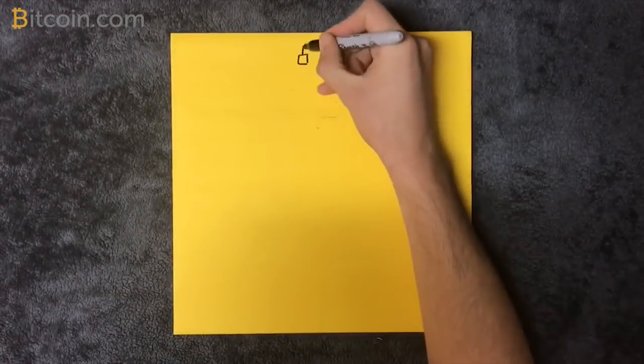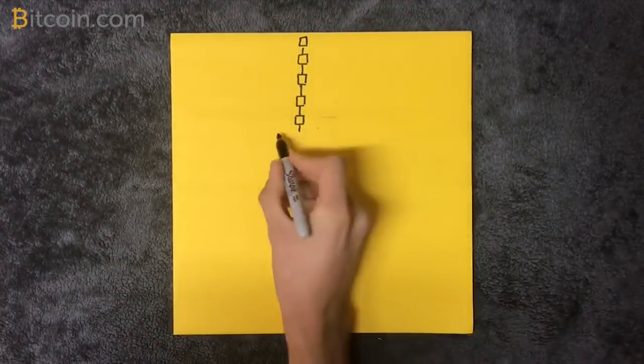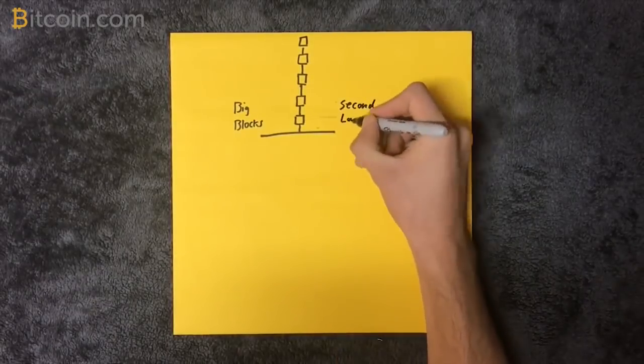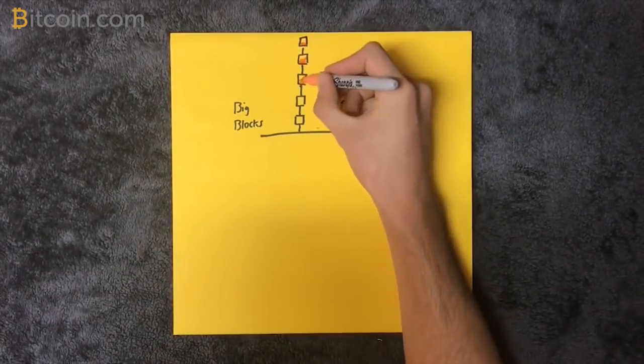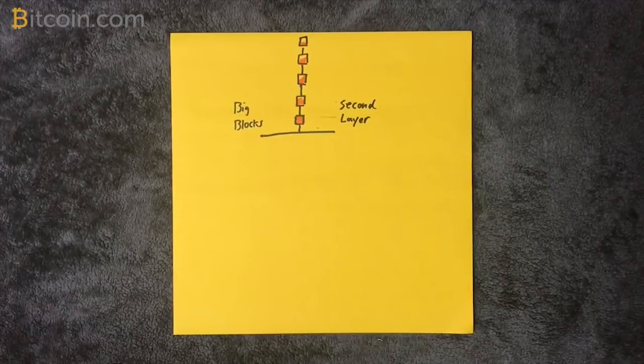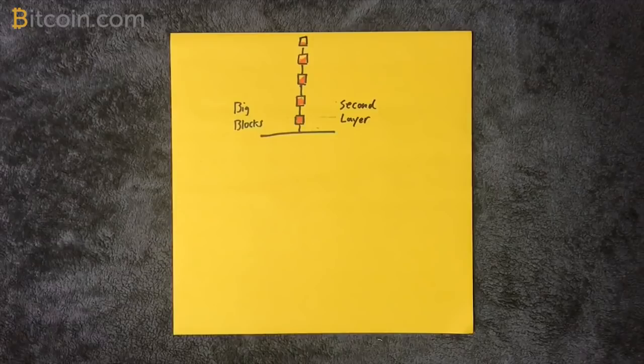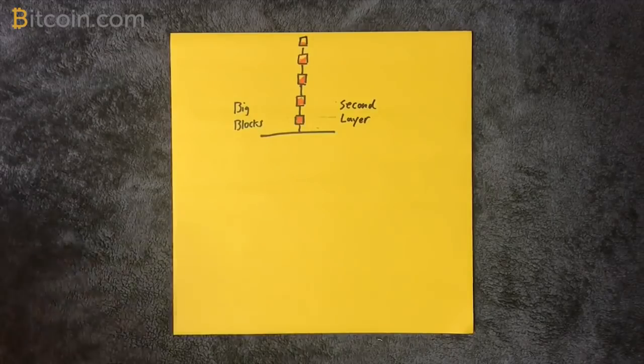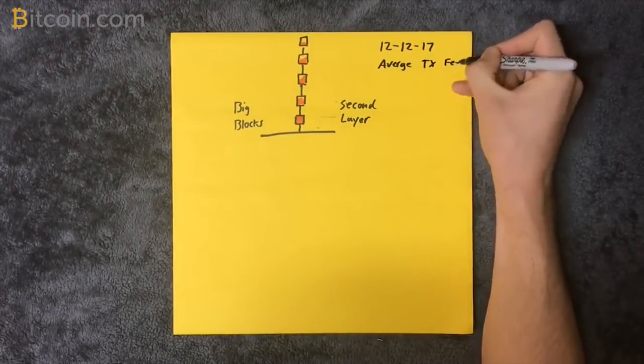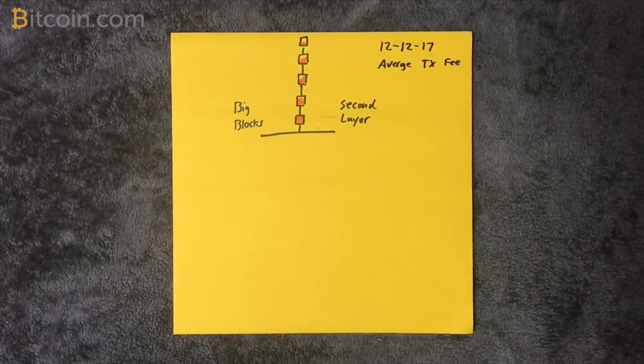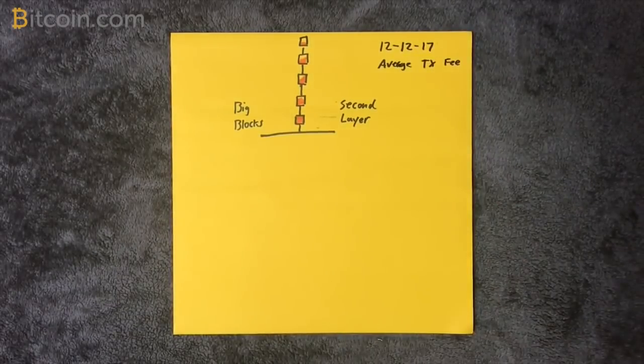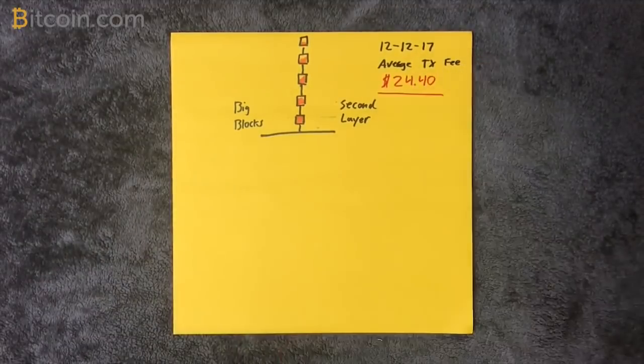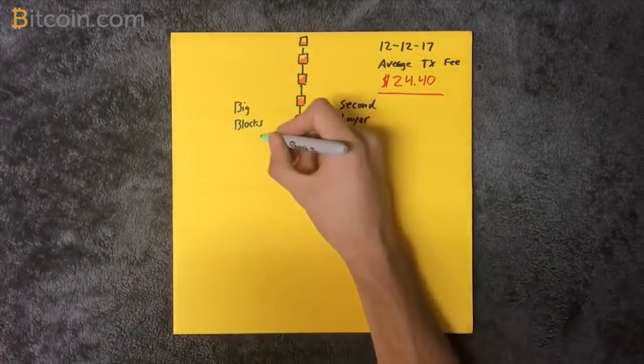Transaction fees have risen because of the block size. The block size is one megabyte currently and only allows for a few transactions per second to take place. Many more happen than this, so the people who pay the highest fee get to go first in line. On December 12, 2017, at the time I'm recording this video, the average transaction fee today was $24.40. This problem only gets worse with time as adoption spreads.